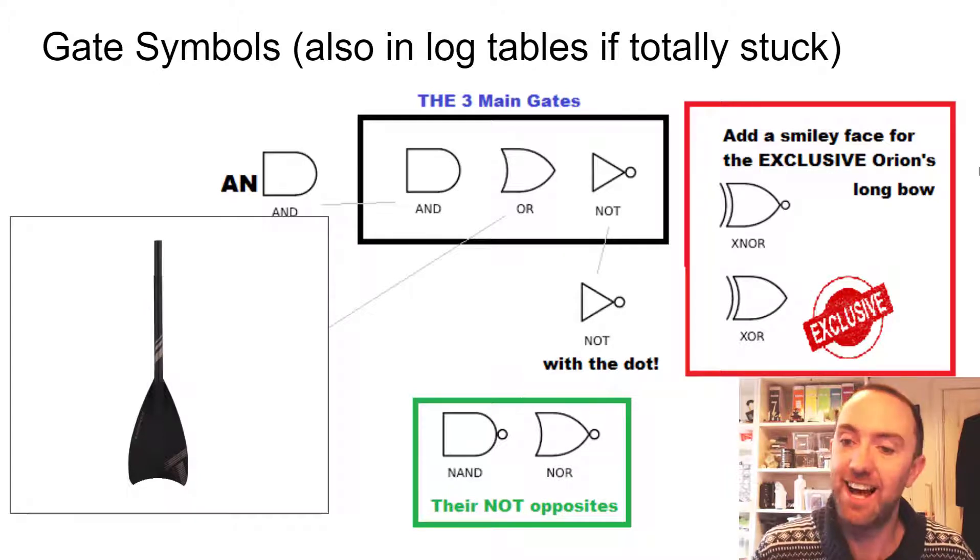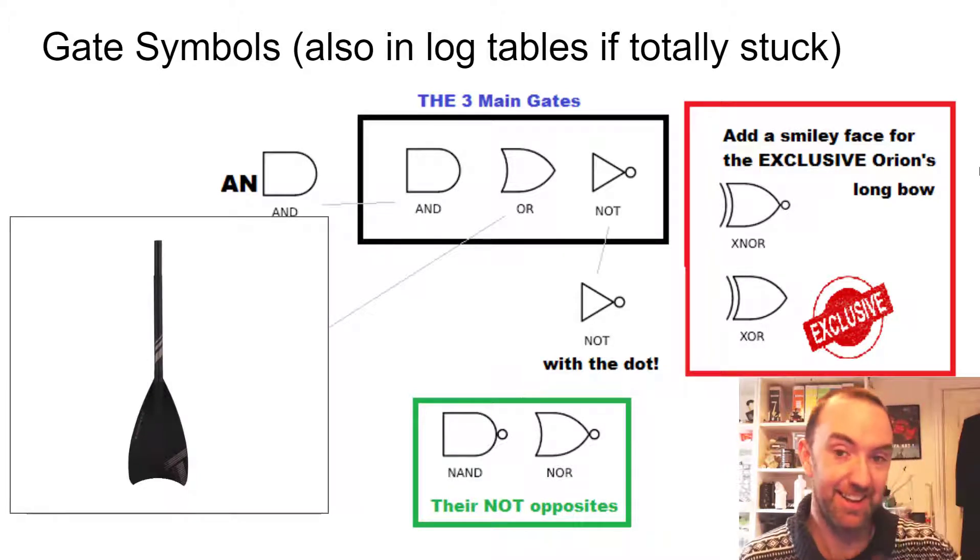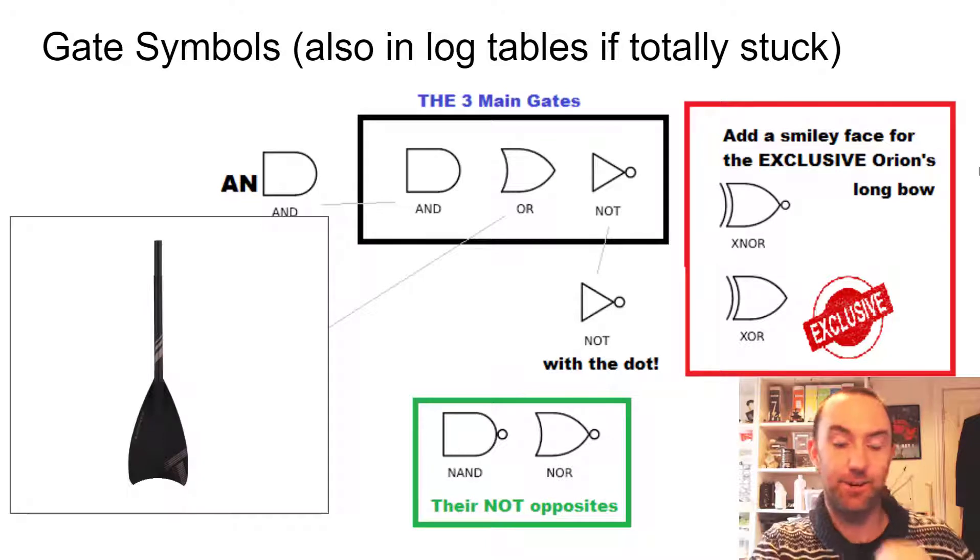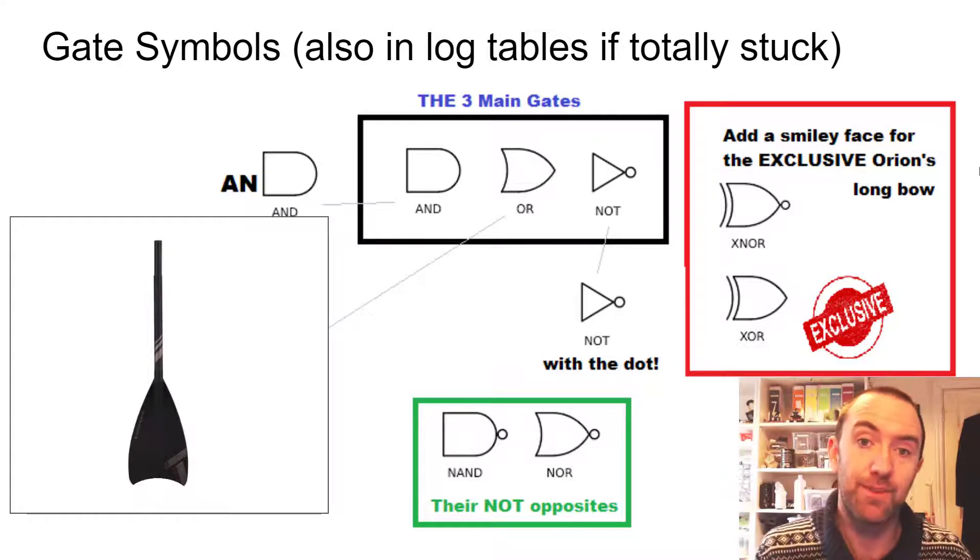The exclusive OR has an extra line on it. So that's your Orion bow with a double string on that bow. And that basically just means one or the other, but not both.